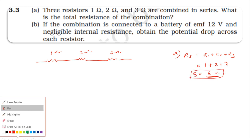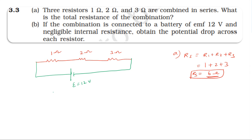Now, the combination is connected to a battery. The battery voltage is 12V. The potential differences across the resistors are V1, V2, and V3.